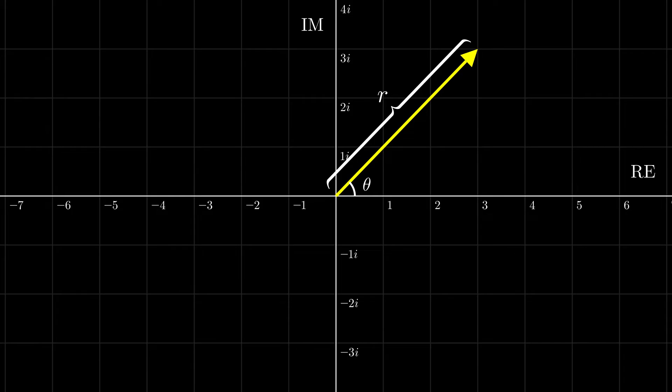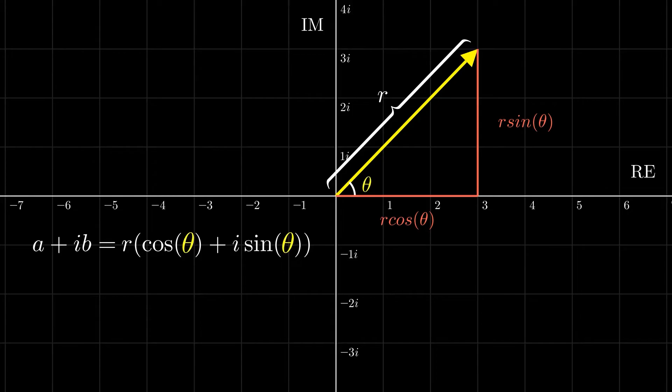Using trigonometry, we find that we can also represent complex numbers in the form r cosθ plus i sinθ, where r is the magnitude of the complex number and θ is the angle it makes with the positive x-axis. We can find θ by using the tan function, as tan of θ is equal to b over a, so θ is arctan of b over a.